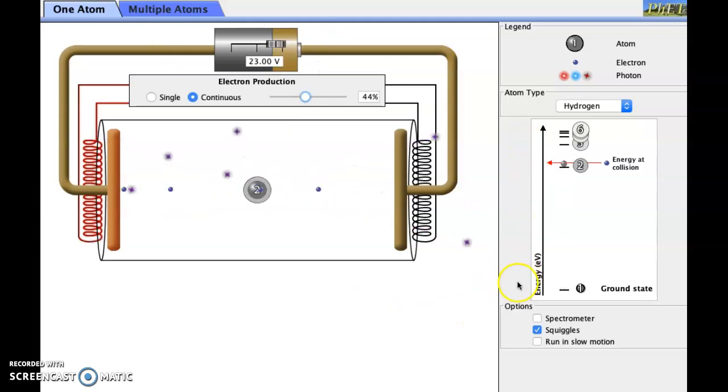If we would look over on the right hand side here we have an energy level diagram. So let me pause this for a moment. So we see a number of these short black lines. Those are denoting the individual energy levels.